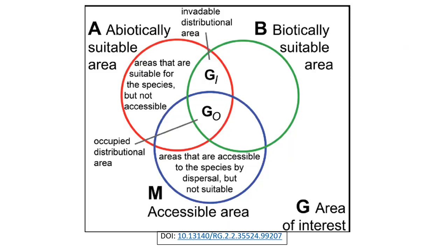Looking at the same diagram with more details: GO is the occupied distribution area, representing the interaction between all three conditions — abiotic, biotic, and accessible area. GI is the invadable distribution area — it is suitable for the species but not accessible, due to limitations in dispersal, for example.